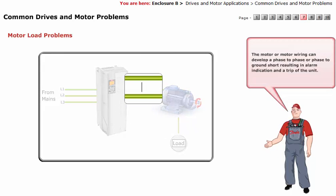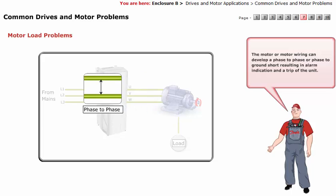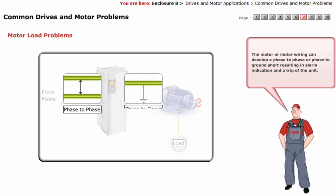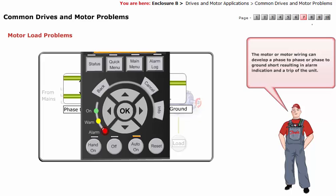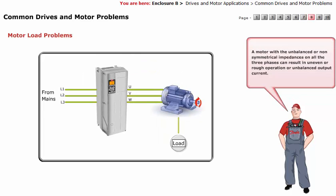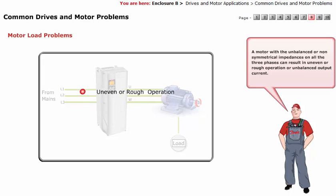The motor or motor wiring can develop a phase-to-phase or phase-to-ground short, resulting in an alarm indication and a trip of the unit. A motor with unbalanced or non-symmetrical impedances on all three phases can result in uneven or rough operation, or unbalanced output current.